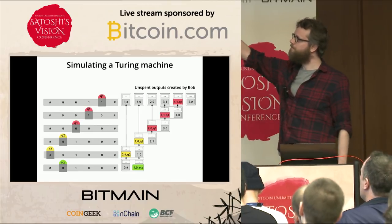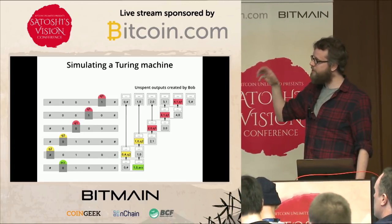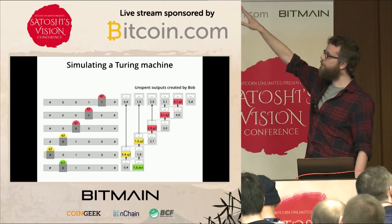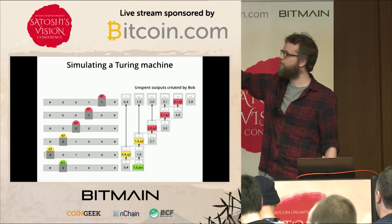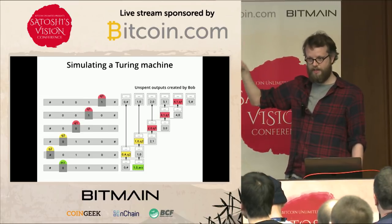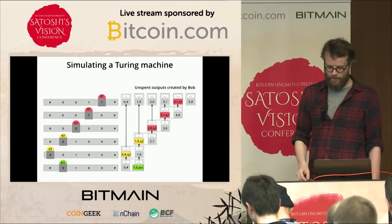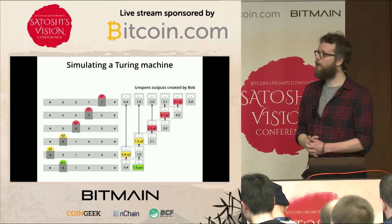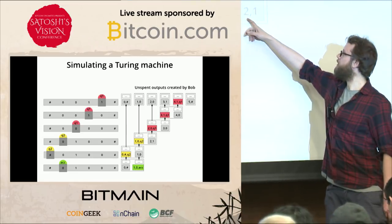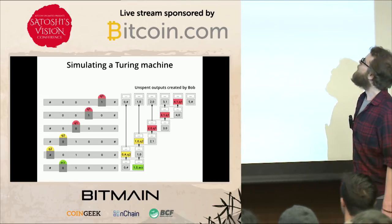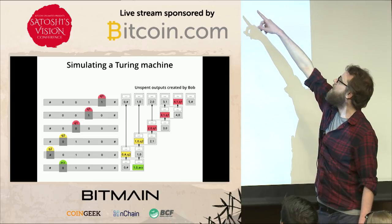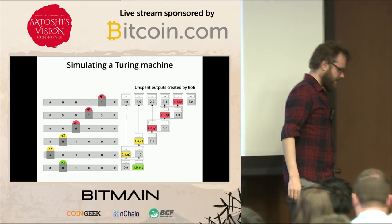The top line shows the outputs encoding the value x, which Bob produces. All the larger squares below are transactions that Bob obtained from Alice — those are the ones encoding function f. Now everybody's probably wondering: what does it mean that an output encodes something? I'll zoom into those squares and explain exactly how the encoding works.